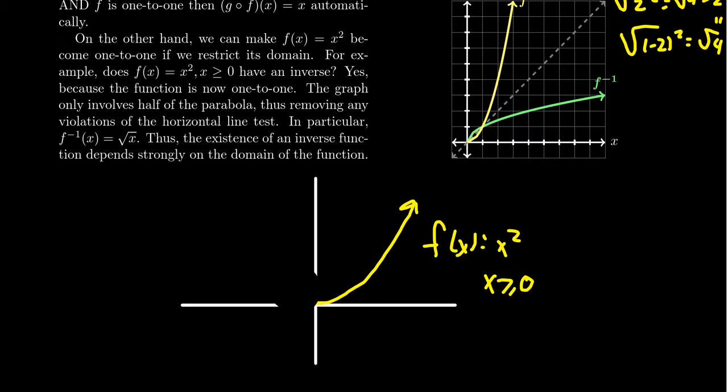In this situation, you'll now see that the graph passes the horizontal line test. This is, in fact, now a one-to-one function. And as such, it has an inverse function.